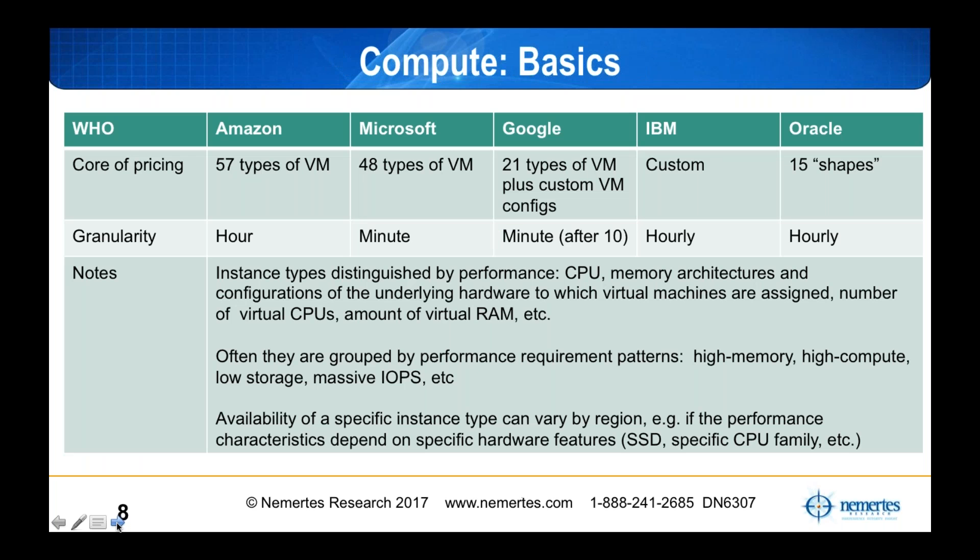Let's start with the basic components — computing. We've got the top cloud providers across the top: Amazon, Microsoft, Google, IBM, and Oracle. These are the ones that had enough participants in our study to capture solid benchmarking data. One clear takeaway is it's no longer a one-horse or two-horse game. You don't want to say cloud is necessarily just Amazon or just Microsoft Azure — your peers are also considering Google, IBM, and Oracle.